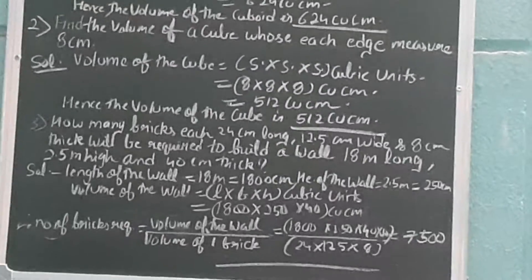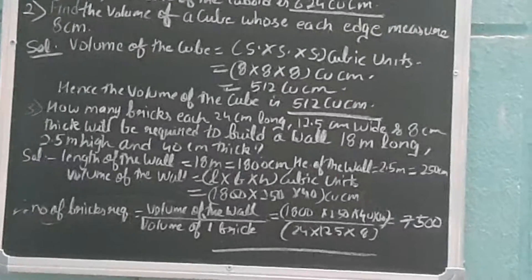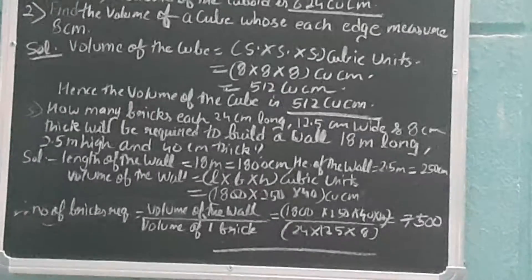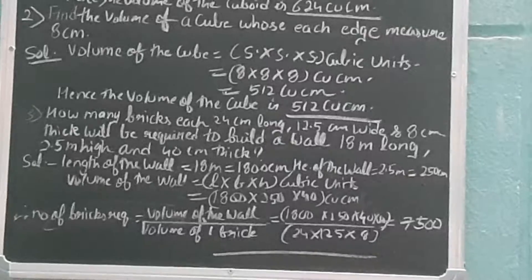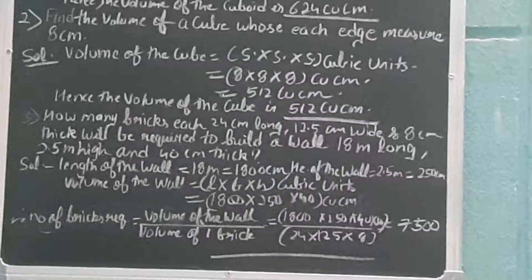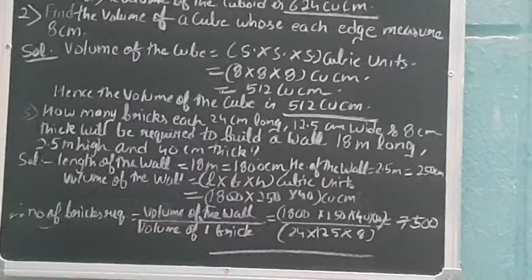Now what is the formula for finding the number of bricks required? It is equal to volume of the wall divided by volume of one brick. So volume of one brick is already given in the question: that is 24 × 12.5...